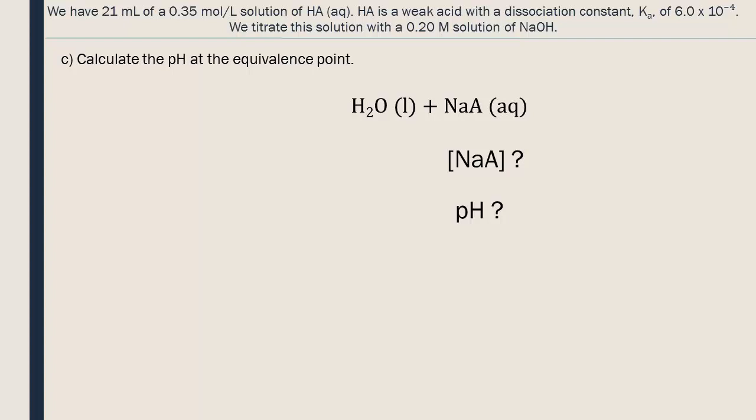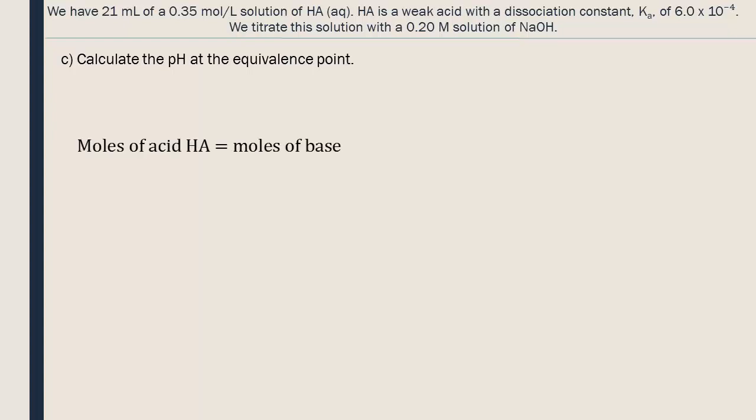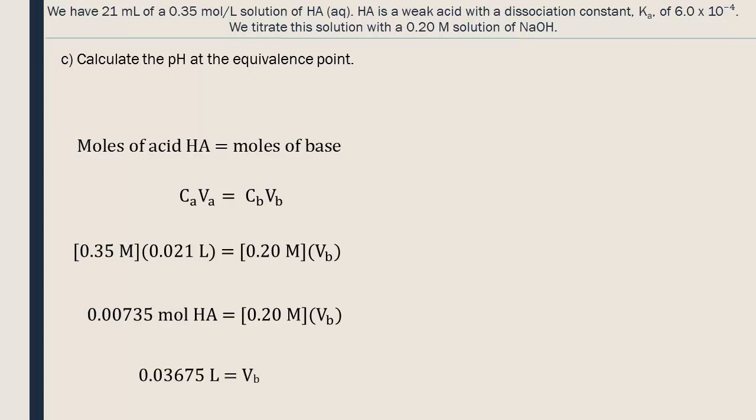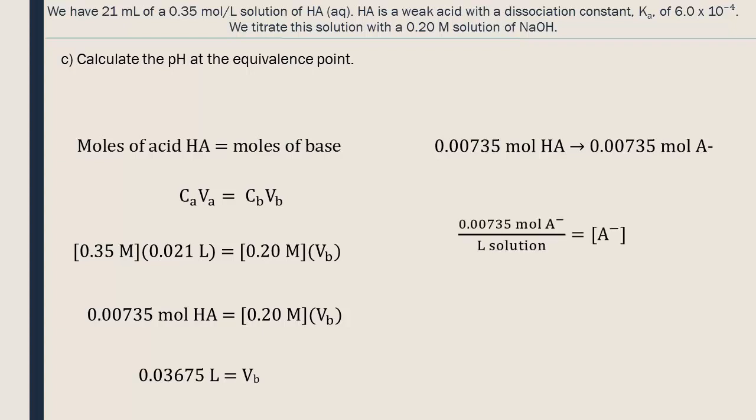At the equivalence point, there is the same amount of moles of HA as A minus in the solution, but this does not mean that the pH will be 7. We will use the classic titration equation. 36.75 milliliters of NaOH were added to titrate the HA up to the equivalence point. Now we can do the dilution calculations. For the rest of the calculations, we are only going to consider the A minus part of the NaA. So if there are 0.00735 moles of HA in the solution at the equivalence point, there will be 0.00735 moles of A minus in solution. Let's calculate the concentration of A minus. The volume at the equivalence point will be the sum of the initial 21 milliliters of HA plus the 36.75 milliliters added.